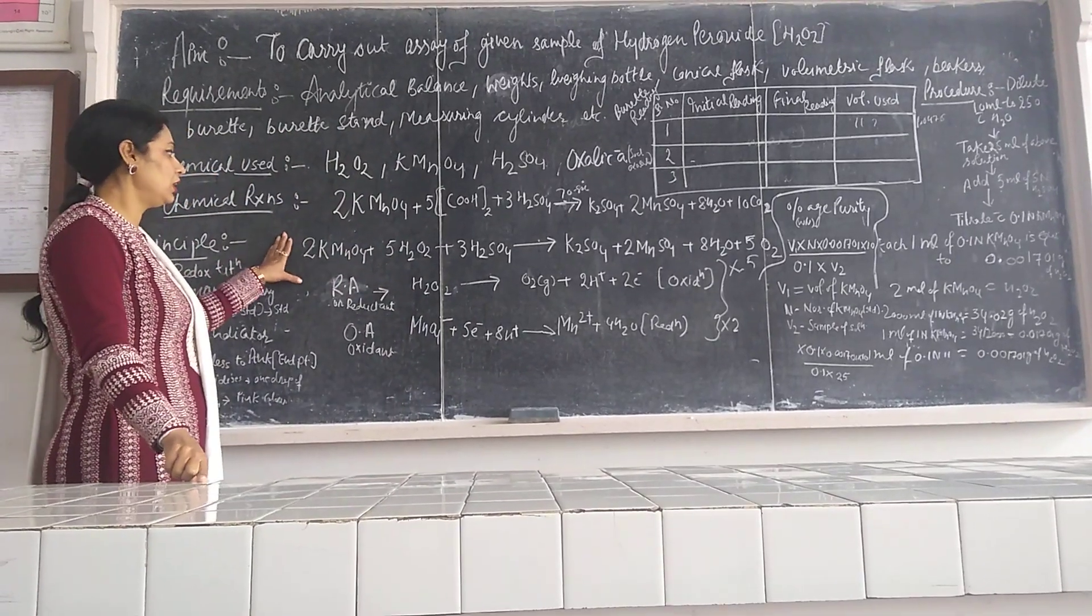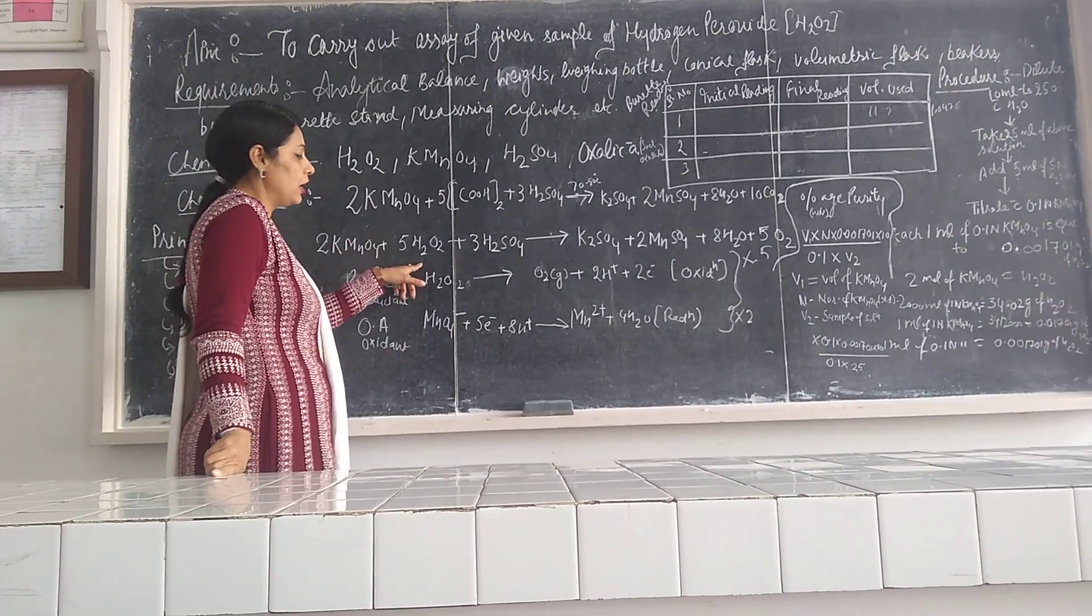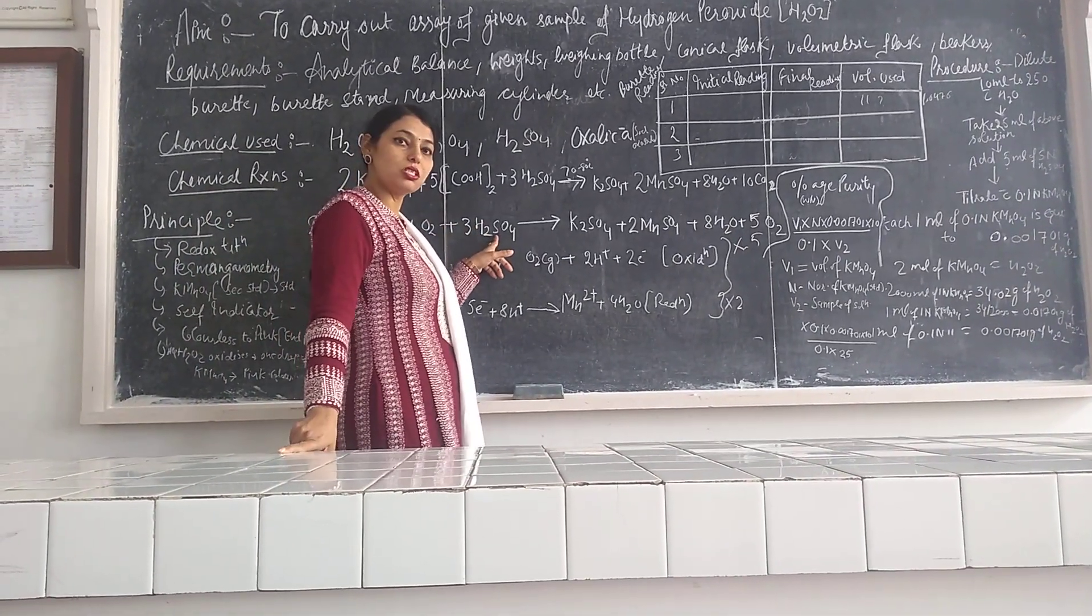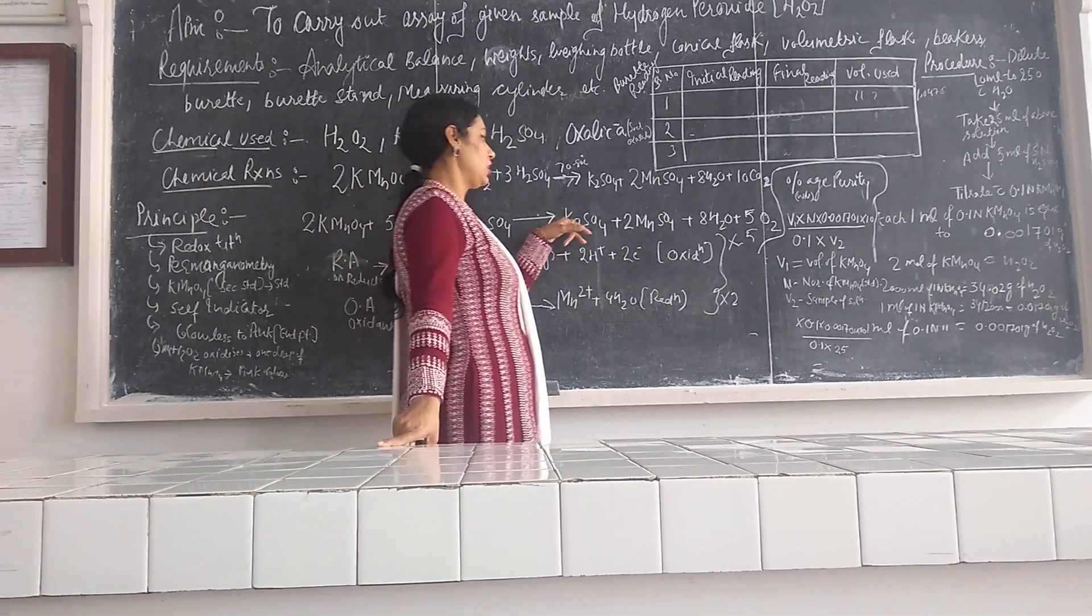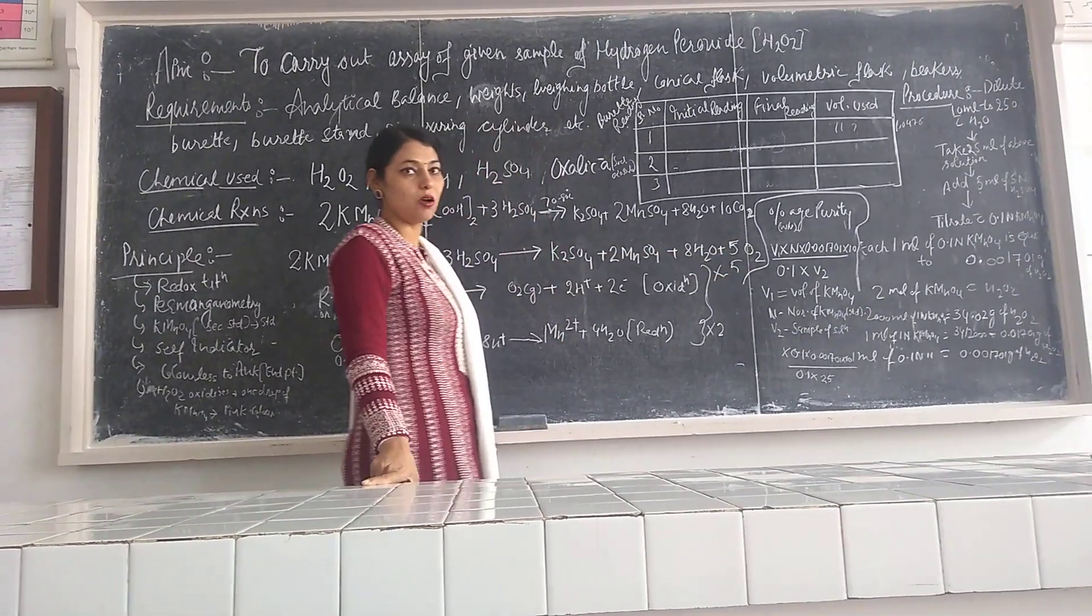While in this practical here two moles of KMnO4 are titrated with hydrogen peroxide in the presence of sulfuric acid to give potassium sulfate, manganese sulfate, water molecules, as well as oxygen.